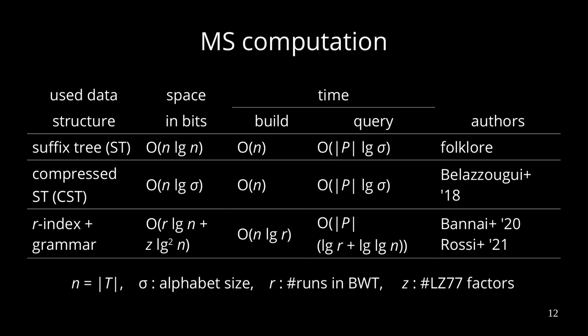Belazzougui could improve the space bounds by using the compressed suffix tree. Here, we focus on even more compressible versions — we want to work with data structures using just compressed space, namely r log n plus c log squared n, where r is the number of runs in the BWT and c is the number of LZ77 factors, which we can do thanks to the r-index and the grammar. The time complexity does not look so compelling, but in practice it is kind of competitive.